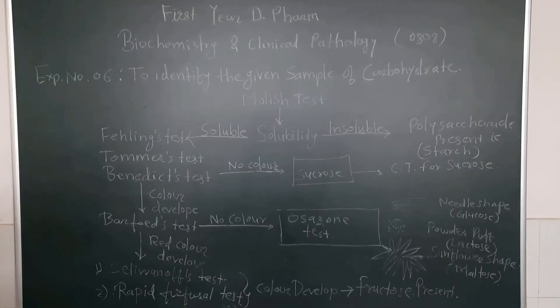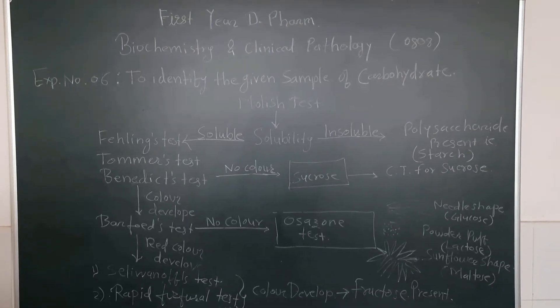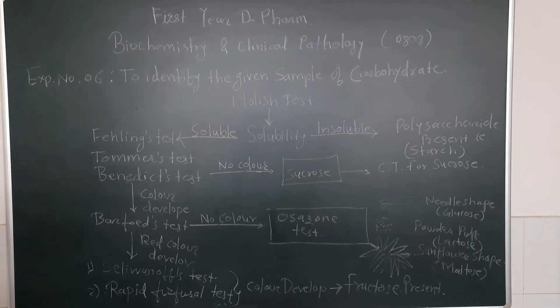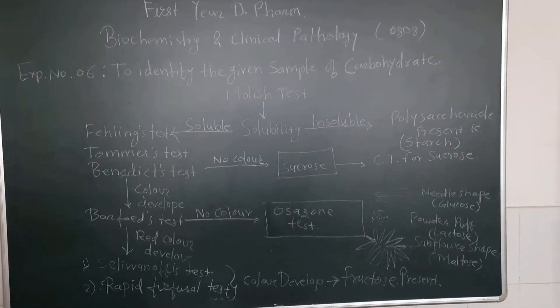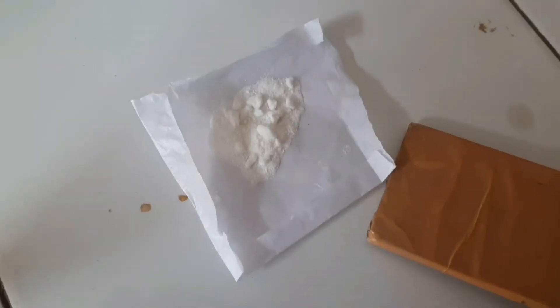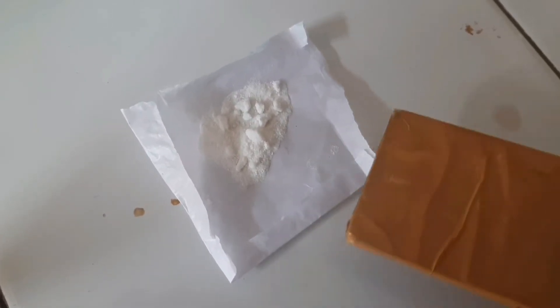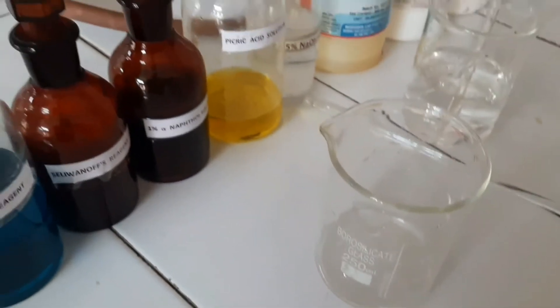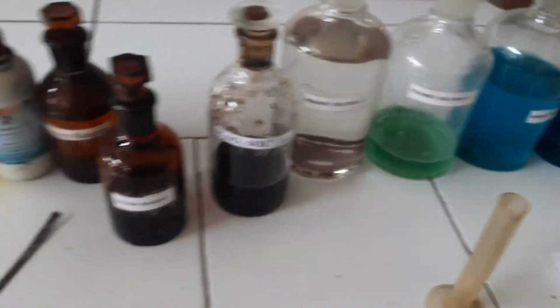Today we are going to perform the practical from biochemistry and clinical pathology, experiment number 6, to identify the given sample of carbohydrate by performing different carbohydrate tests. The unknown sample of carbohydrate will be dissolved in 20 ml of distilled water. These are the different chemicals and apparatus required for the practical.